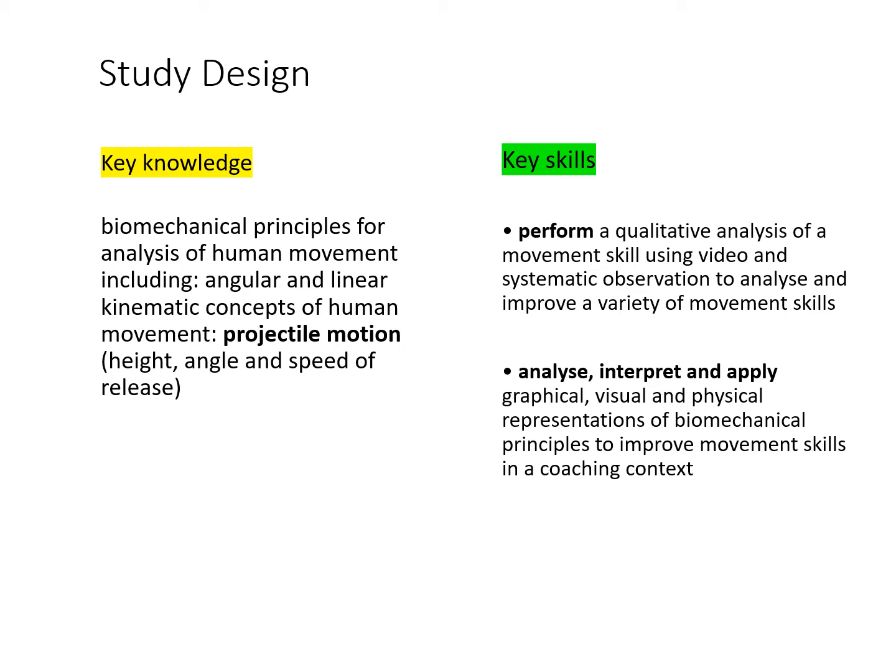So underneath the biomechanical principles, this slide shows looking at projectile motion and essentially it's three things: height, angle and speed of release of a projectile, remembering that the projectile can be a human body or javelin, shot put, football, golf ball.